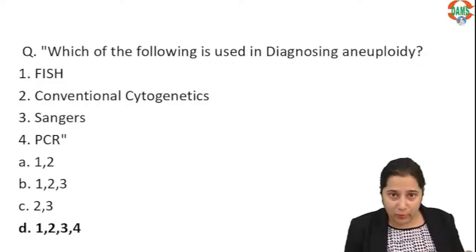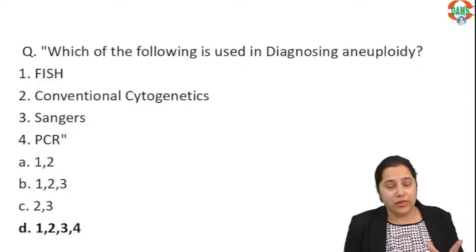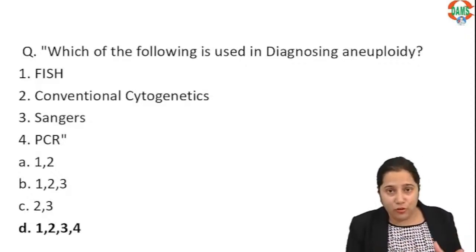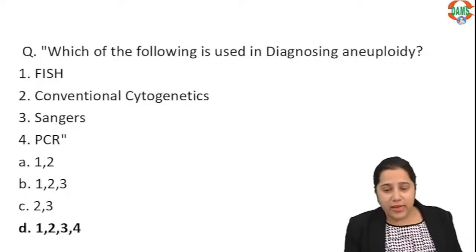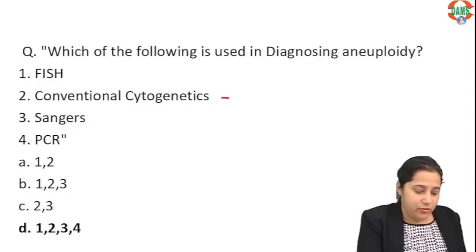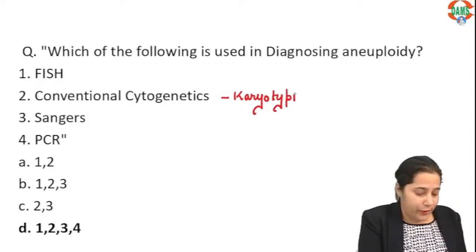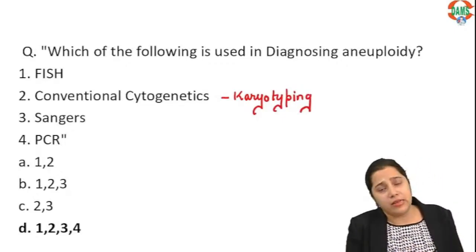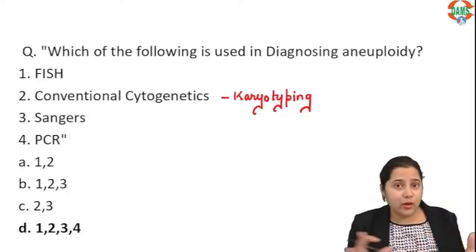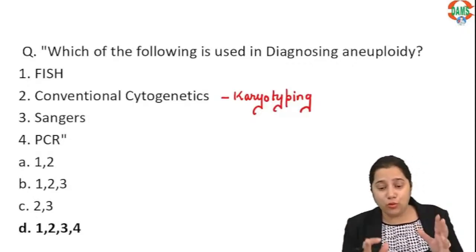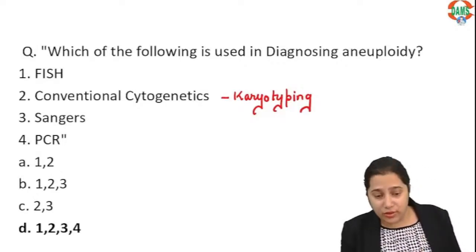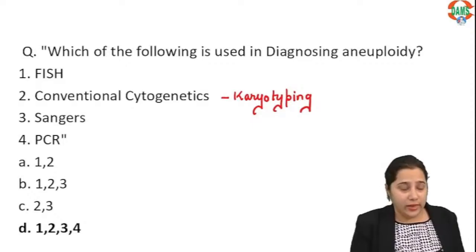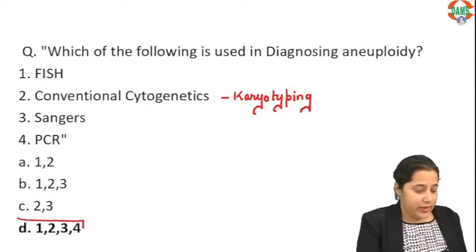Fluorescence in-situ hybridization (FISH) is a technique used for detecting chromosomal hybridization and can help us detect aneuploidy. Conventional cytogenetics, that is karyotyping, is still used and relevant for diagnosing aneuploidy. Sanger sequencing is a technique by which we can sequence the DNA, and PCR can also be used to determine DNA length. So all these techniques can be used.